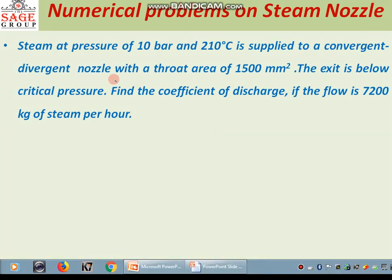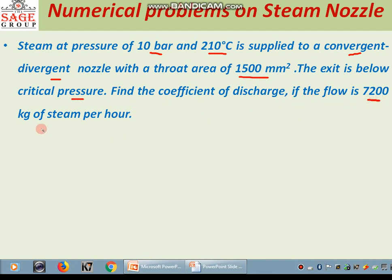Now we are taking another problem. Steam at a pressure of 10 bar and 210 degree centigrade is supplied to a convergent-divergent nozzle with a throat area of 1500 square millimeter. The exit pressure is below critical pressure. Find the coefficient of discharge if the flow is 7200 kg of steam per hour.